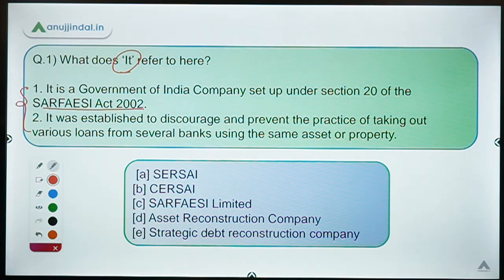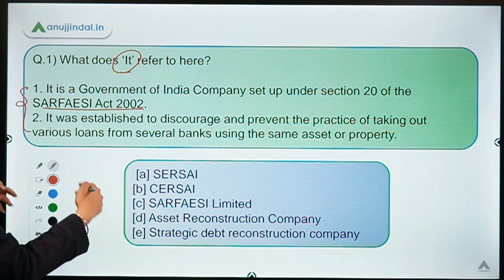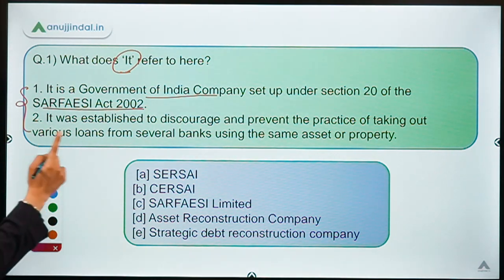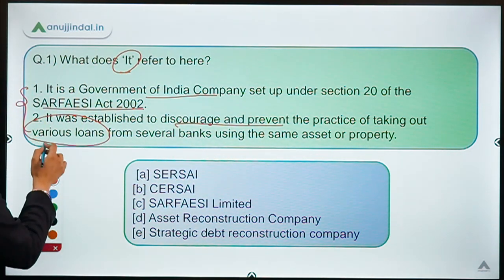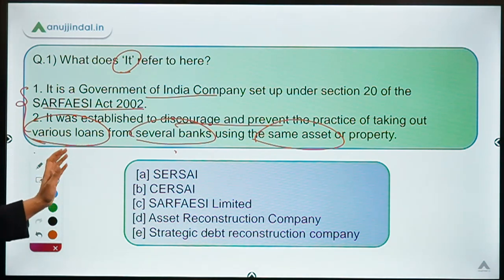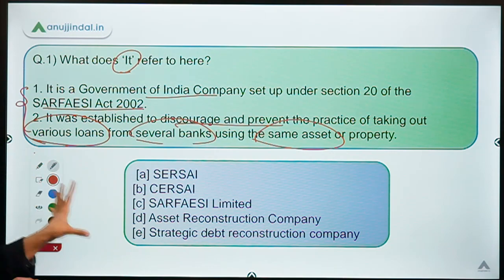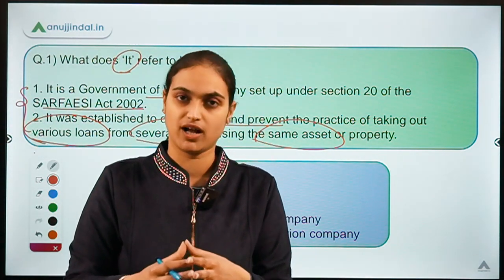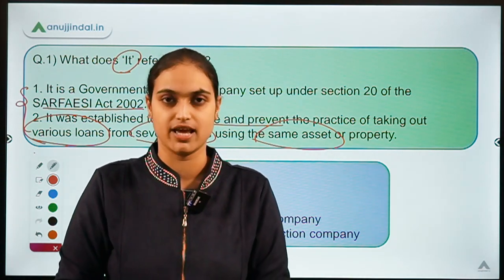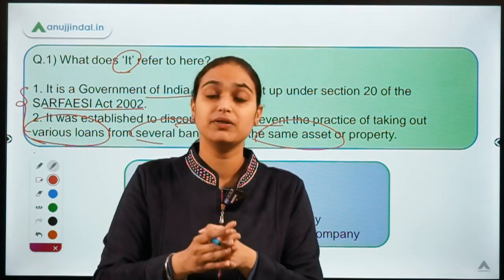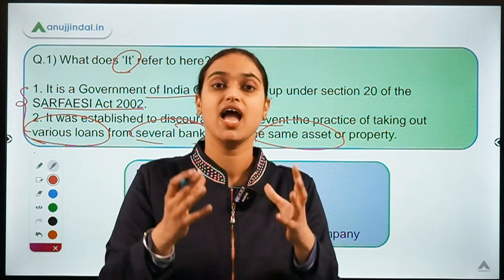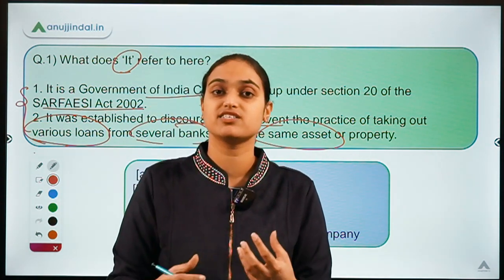The second statement explains the purpose behind the setting up of this company. It states: it was established to discourage and prevent the practice of taking out various loans from several banks using the same asset. These are the keywords here — taking various loans from different banks using the same asset. The company was set up under the SARFAESI Act and it is a government company where the central government has a 51% stake.